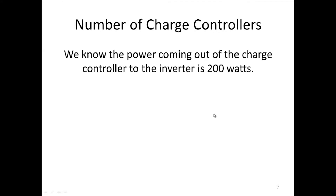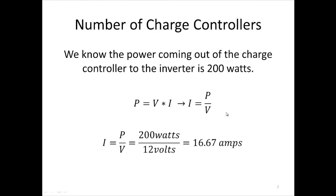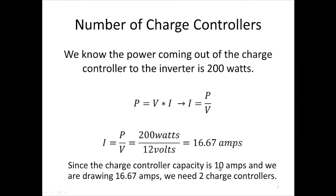We know the power coming out of the charge controller to the inverter is 200 watts. We need to find the current, because the charge controller is rated with a current rating. Using power equals voltage times amperage, we rearrange: amperage equals power over voltage. With 200 watts and 12 volts, the amperage is 16.67 amps. Since our rating is 10 amps and we're drawing 16.67 amps, we need two charge controllers — giving a combined rating of 20 amps.